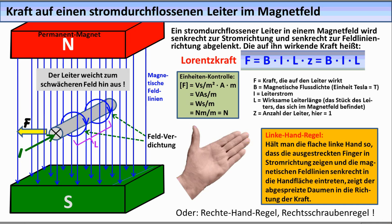Warum nun auf einen stromdurchflossenen Leiter im Magnetfeld eine Kraft wirkt, wie beim Lautsprecher, ist hier zu sehen. Der Leiterstrom ist in die Zeichenebene hineingerichtet. Nach der rechten Handregel erzeugt er also ein Magnetfeld, das konzentrisch im Uhrzeigersinn um den Leiter herum verläuft. Auf der linken Seite des Leiters sind das Feld des Leiters und das äußere Feld des Permanentmagneten entgegengesetzt gerichtet, sodass sich die beiden Felder dort teilweise aufheben, während sie sich rechts vom Leiter verstärken.